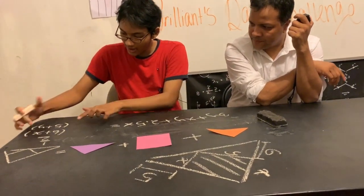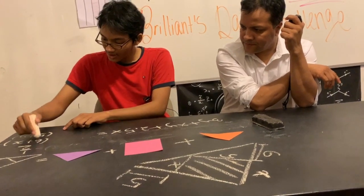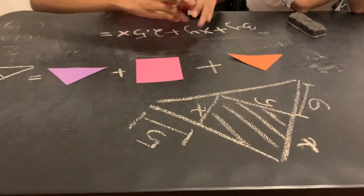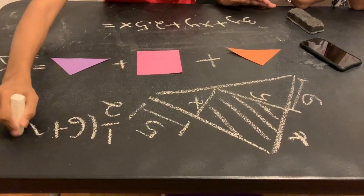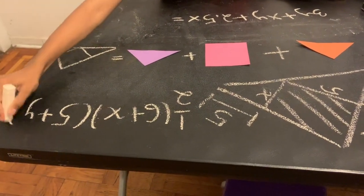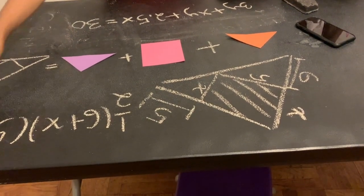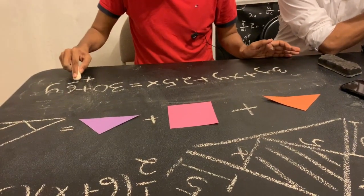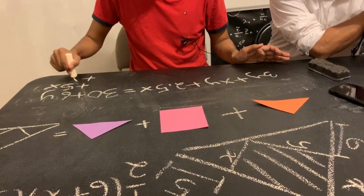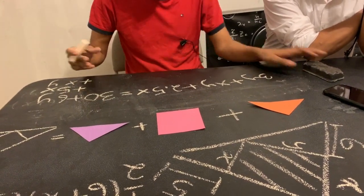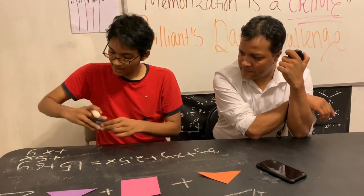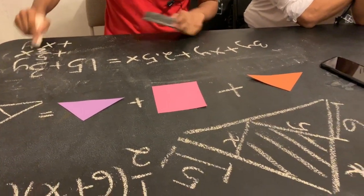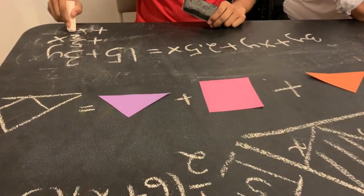I have to FOIL this out: half of (six plus x) times (five plus y). Six times five is going to give me 30. Six times y is going to be 6y. Five times x is going to be 5x. And x times y is going to be xy. But I have to divide everything by two, so 30 becomes 15, 6y becomes 3y, 5x becomes 2.5 (or 5 over 2), and xy becomes xy over 2.